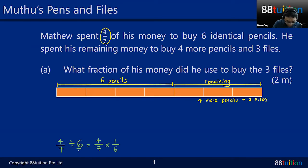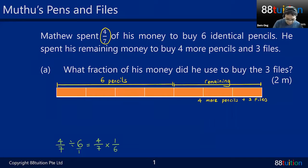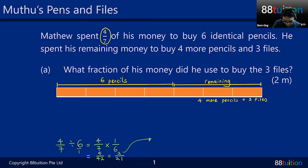Remember stay-change-flip. Six is actually six over one — you cannot divide by a fraction directly. Using stay-change-flip: four times one is four, seven times six gives forty-two. Reduce to lowest terms and you get two over twenty-one.